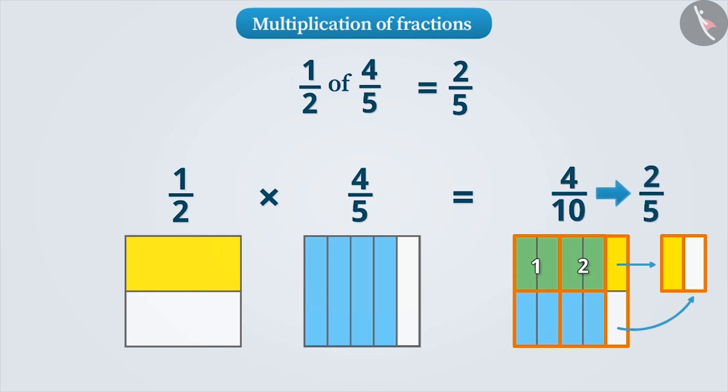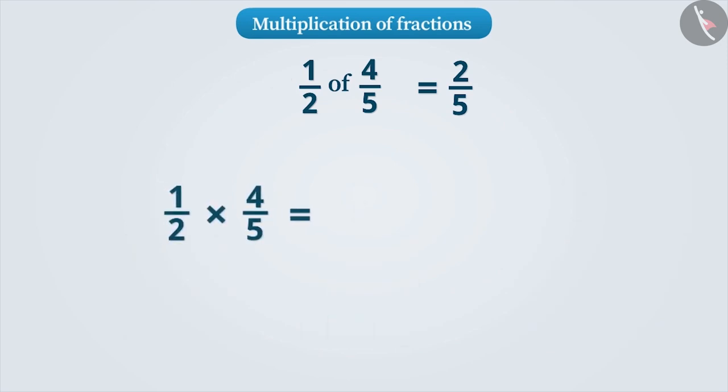Thus, we can say that half of 4 by 5 is half into 4 by 5 which is equal to 2 by 5, or the half of 4 by 5 is the same as 2 by 5. To multiply two fractions...